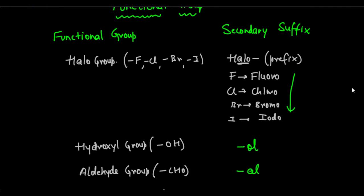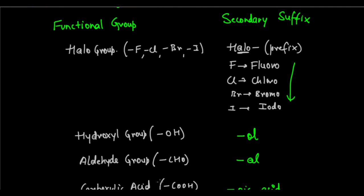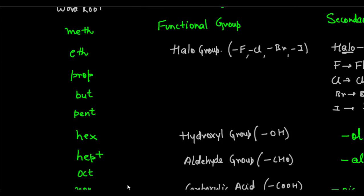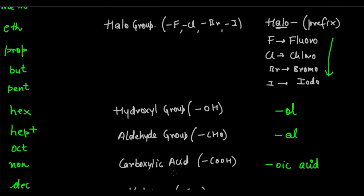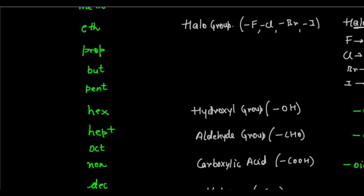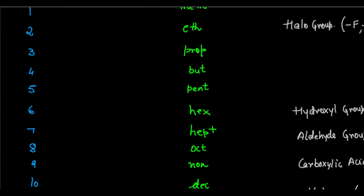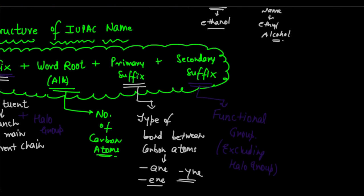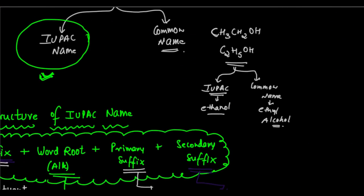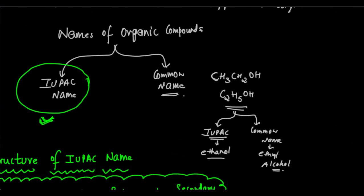So basically, we have now looked at the word root, and we have looked at the functional groups and the secondary suffixes. For now, this video is done. We have looked at the introduction to nomenclature — this is the first part of IUPAC nomenclature. In the next video, we'll be beginning the proper process of the naming. Thank you very much. Goodbye.